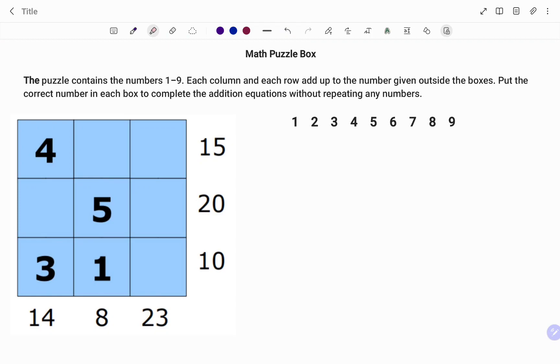The puzzle contains the numbers one to nine as listed. Each column and each row add up to the number given outside the boxes. We have to put the correct number in each box to complete the addition equations without repeating any numbers.